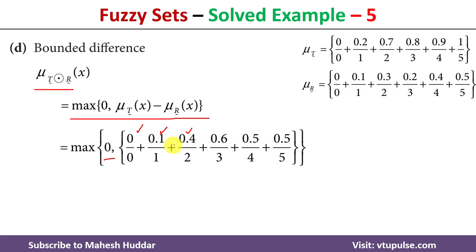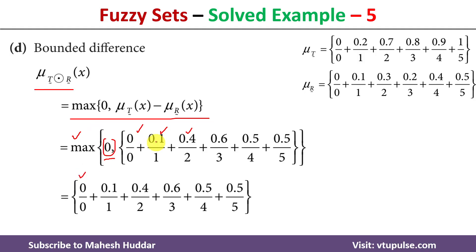Once we calculate the differences, we compare 0 against all the values and take the maximum. Between 0 and 0, the maximum is 0; 0 and 0.1, the maximum is 0.1; 0 and 0.4, the maximum is 0.4; 0 and 0.6, the maximum is 0.6, and so on. This is how the bounded difference between two fuzzy sets looks.